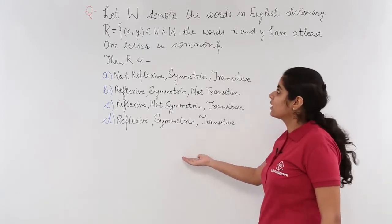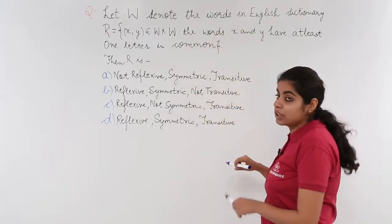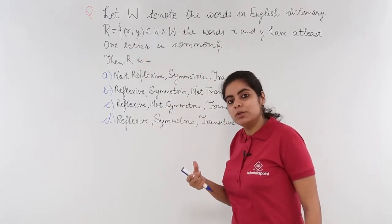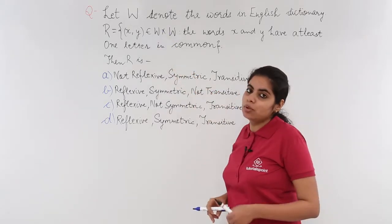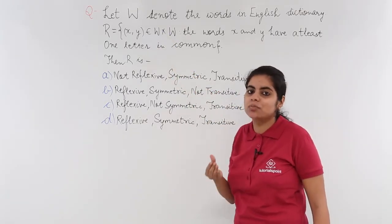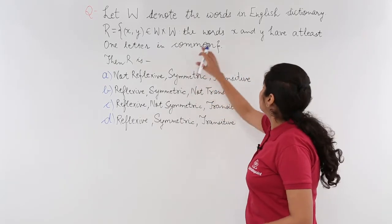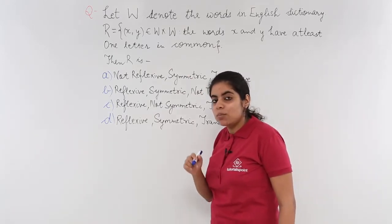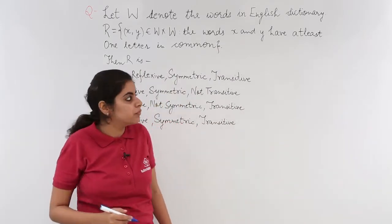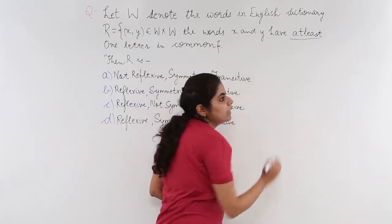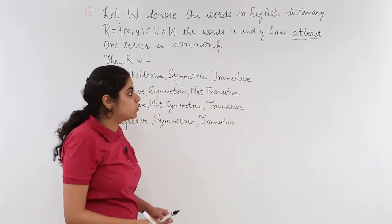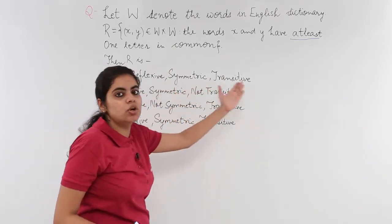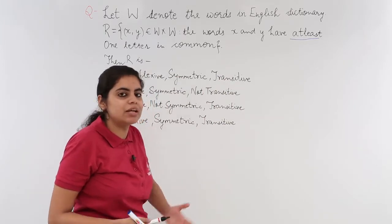Let's read out the question together. Let W denote the words in the English dictionary and a relation R is given as (x, y), which is an ordered pair, belonging to W×W — the Cartesian product of the words. The condition is that x and y have at least one letter in common. I underline 'at least' because it is of much significance for this question. We have to check which of the options is correct — whether the relation is reflexive, symmetric, transitive, or not reflexive, not symmetric.